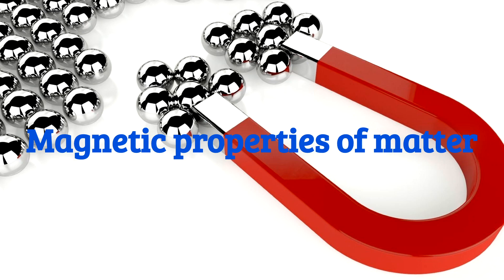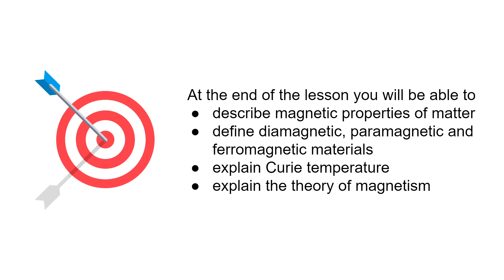Hello everybody, welcome to our lesson. Today's topic is magnetic properties of matter. At the end of the lesson you'll be able to describe magnetic properties of matter, define diamagnetic, paramagnetic, and ferromagnetic materials, explain Curie temperature, and explain the theory of magnetism.